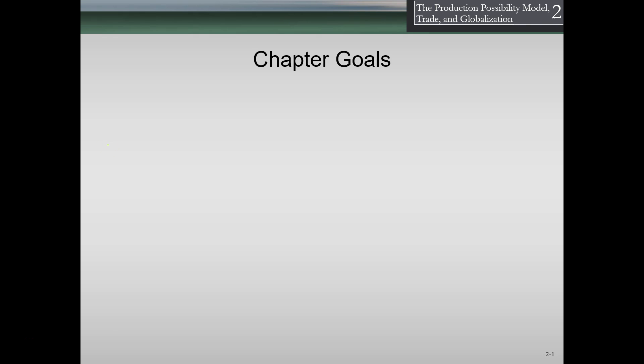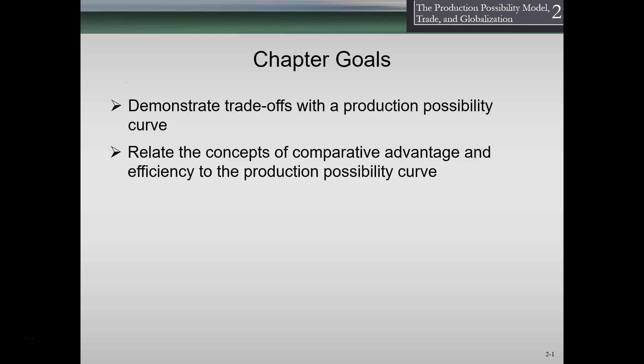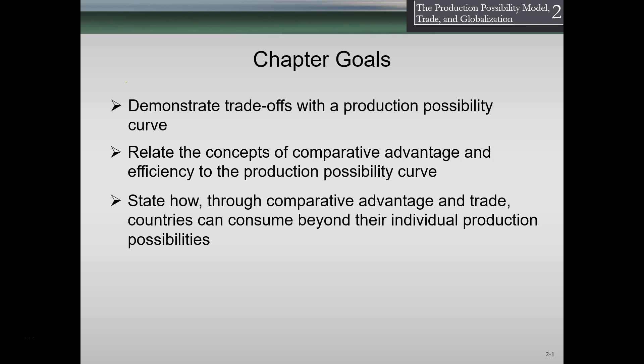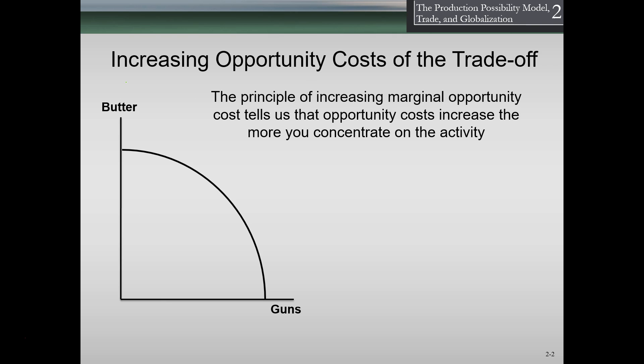Hello. In this lecture we're going to continue on the production possibility model, trade, and globalization, chapter two. Our goals are to demonstrate trade-offs with the production possibility curve, relate the concepts of comparative advantage and efficiency to the production possibility curve, state how through competitive advantage and trade countries can consume beyond their individual production possibilities, and explain how globalization is guided by the law of one price.